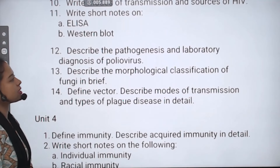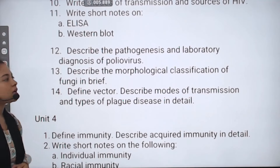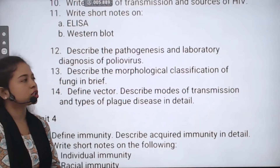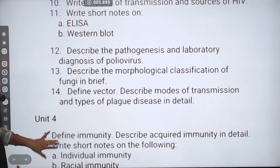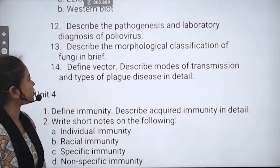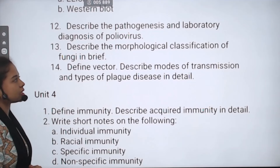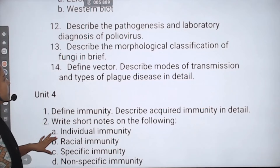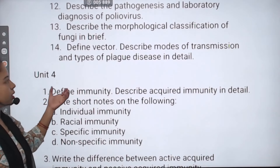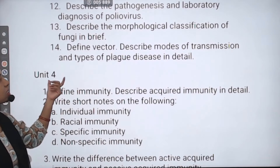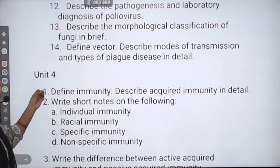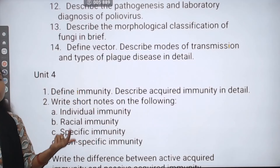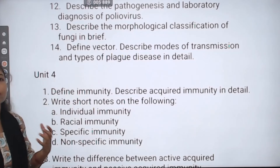Next question: Describe the pathogenesis and laboratory diagnosis of poliovirus. Next question: Describe the morphological classification of fungi in brief. Then, define vector — give its definition. Next, describe the modes of transmission and types of plague disease in detail — what modes does plague transmit through, what types exist, and write those details.